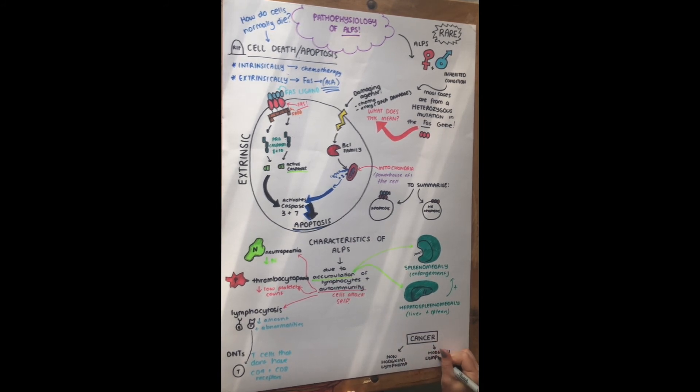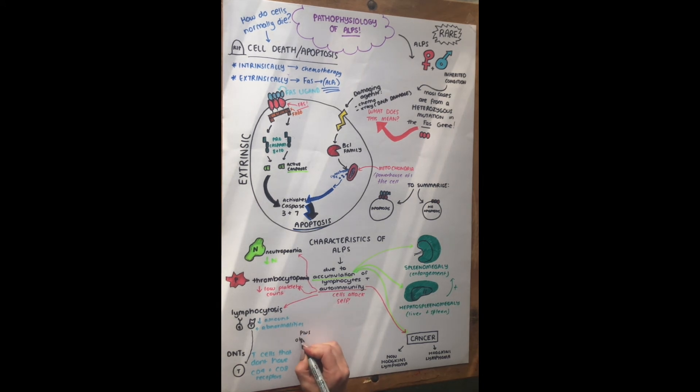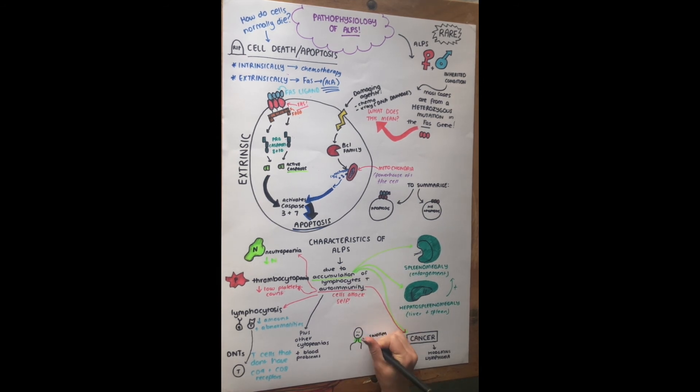And then, there's lots of other cytopenias and blood problems involved. I just listed a few there. But one of the main things that you will see, and it's the first thing that you can really see, is usually swollen lymph nodes, so someone will have a big neck. And that's called lymphadenopathy, and that's disease of the lymph nodes. So that's commonly seen in patients with ALPS.